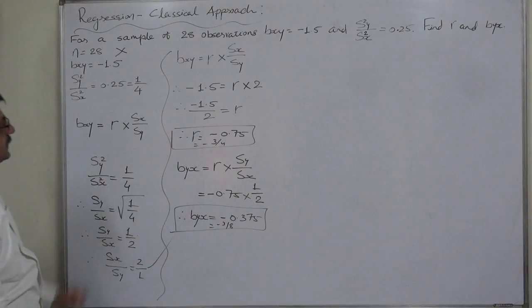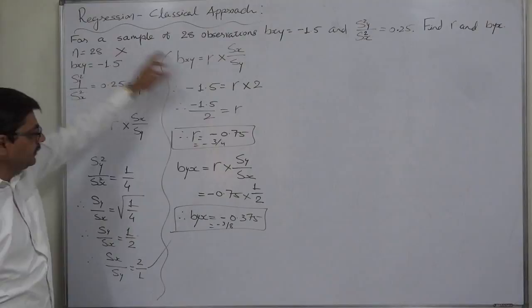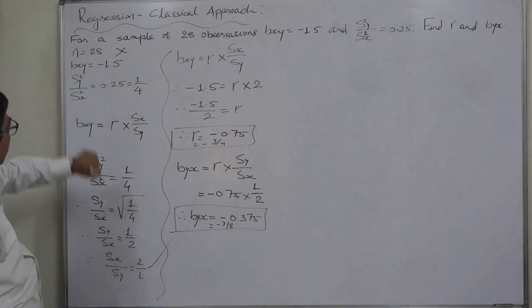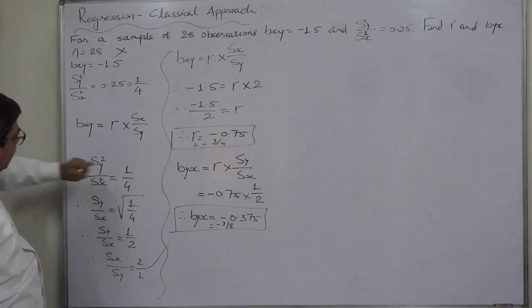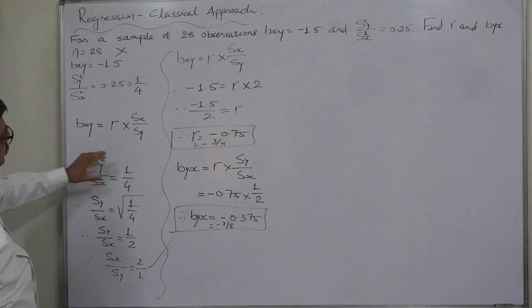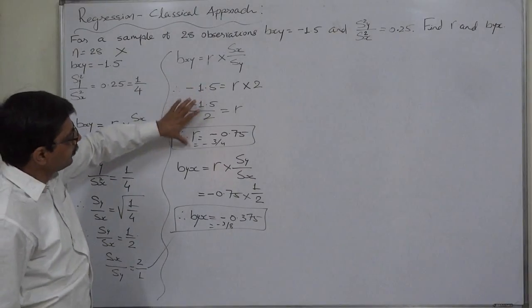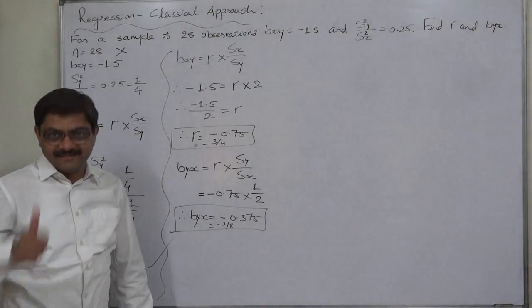So, in this way, two small things are to be considered. First, there is no role of N in entire solution. And number two, square root of this gives us Sy upon Sx, that is part of formula of Byx. And its reciprocal or inverse gives us Sx upon Sy, on the basis of which we can find the coefficient of correlation through the formula of Bxy. That's it. Thank you very much.